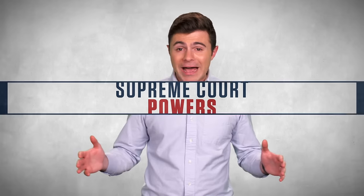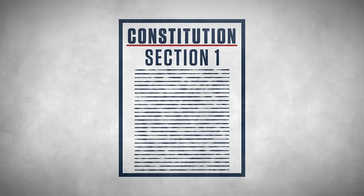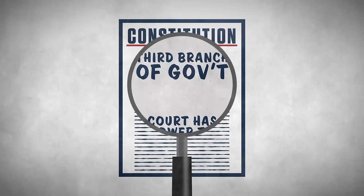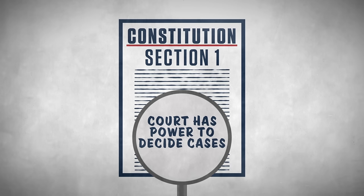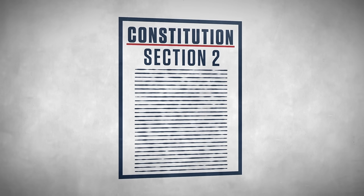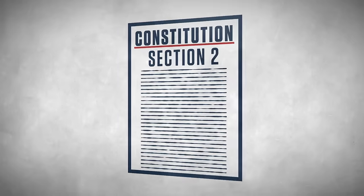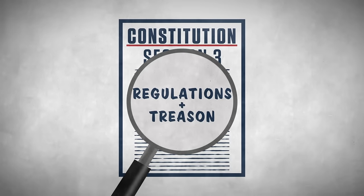When it comes to the power the Supreme Court wields, the Constitution is pretty vague. Section 1 identifies the Supreme Court as a third branch of government and empowers the court to decide cases — that's pretty much it. Section 2 touches on jurisdiction, and Section 3 spells out regulations around treason cases.